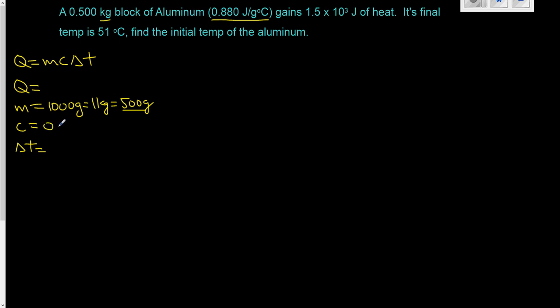Okay, specific heat capacity, 0.880 joules, grams, degrees Celsius. 1.5 times 10 to the third joules, and that's expressed in scientific notation, where you have a number expressed times 10 to the power of an exponent. And I'm going to put this guy back into regular notation or ordinary notation, and it would look like this. Take this decimal and move it three times to the right. So it looks like that.